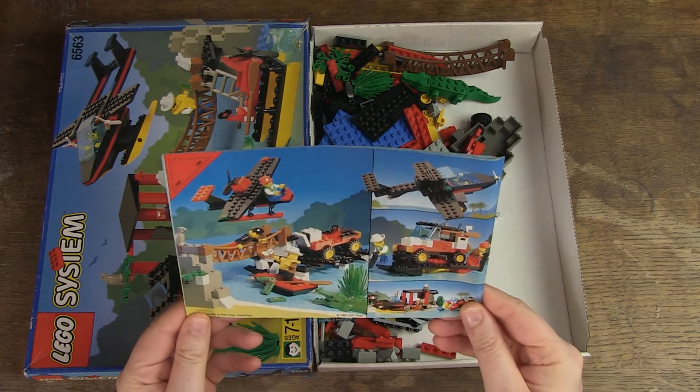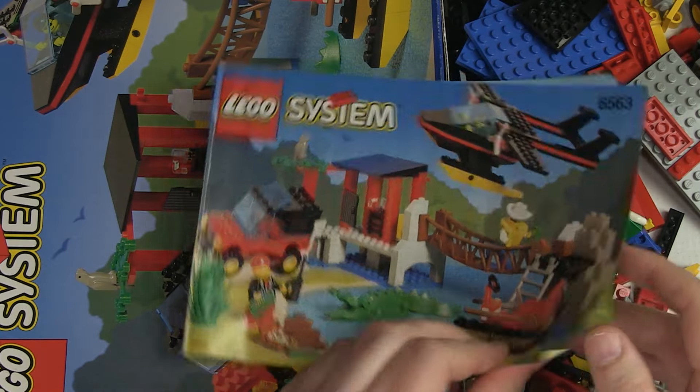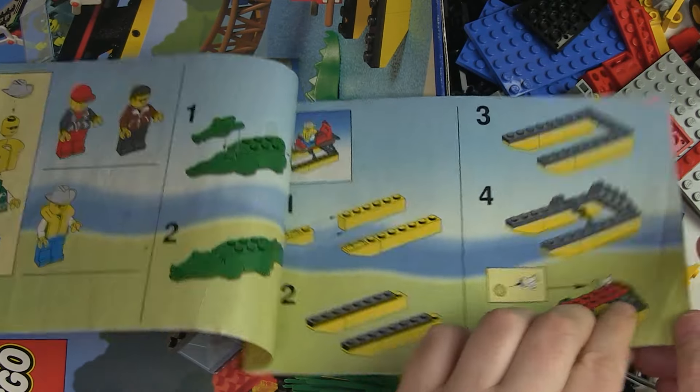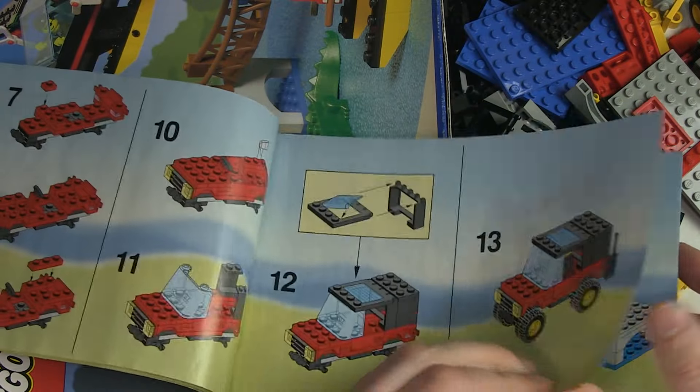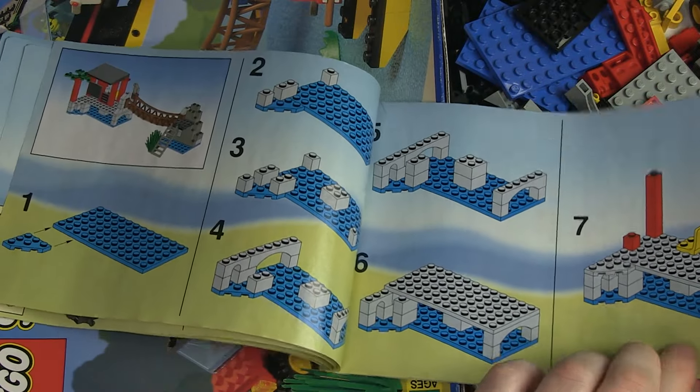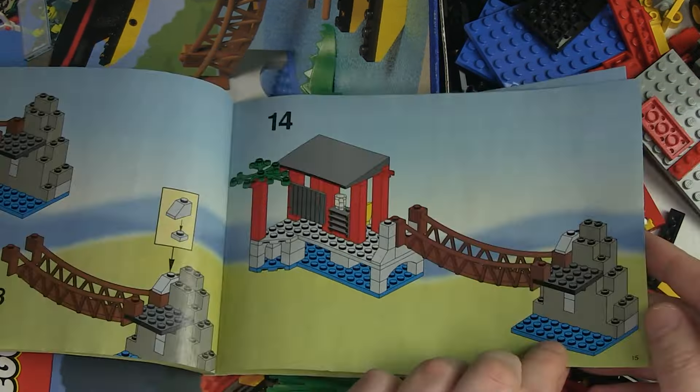A handy format with clear photos of what you need to build. There are four parts to build: the hovercraft, the jeep, the hut with suspension bridge and rock formation, and the seaplane.